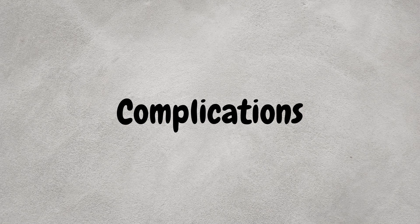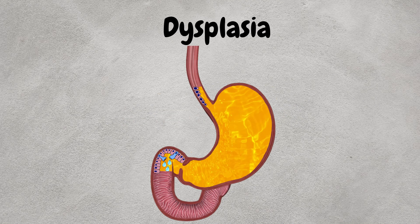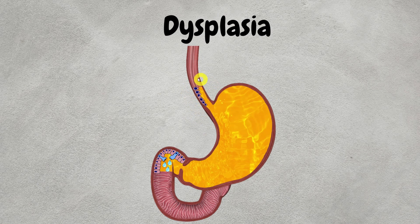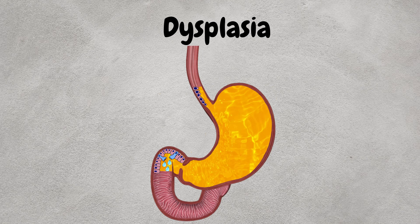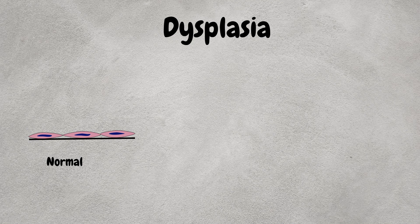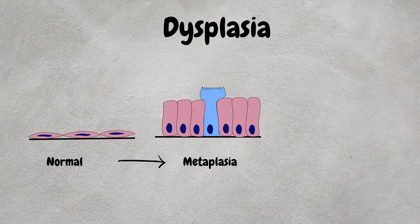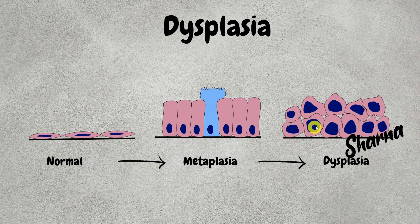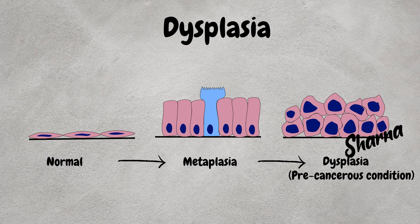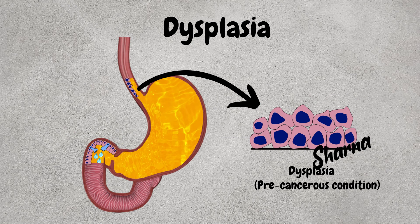Now let us discuss the potential risks and complications associated with Barrett's esophagus. Number one is dysplasia — Barrett's esophagus may progress to dysplasia, which involves abnormal cellular changes in the lining of the esophagus and increases the risk of cancer. Remember, metaplasia is where one type of normal matured cell is converted into another type of matured cell; it happens in response to chronic irritation, inflammation, or injury — just an adaptive change. Dysplasia, on the other hand, refers to abnormal cellular changes such as abnormal cellular architecture, cellular disorganization, and abnormal growth patterns. It is considered a pre-cancerous condition.